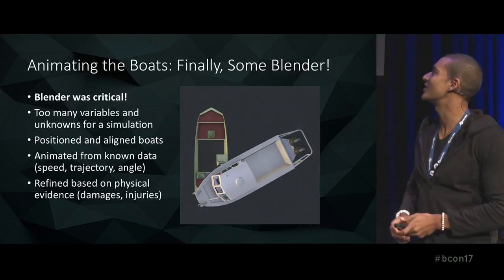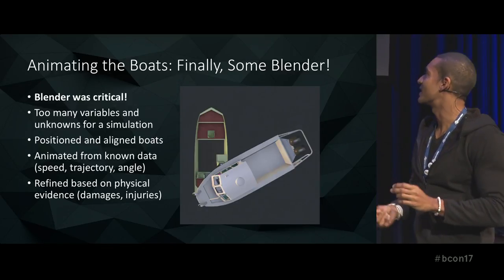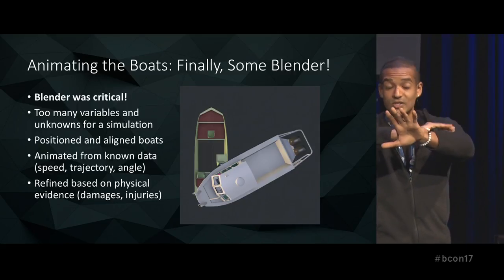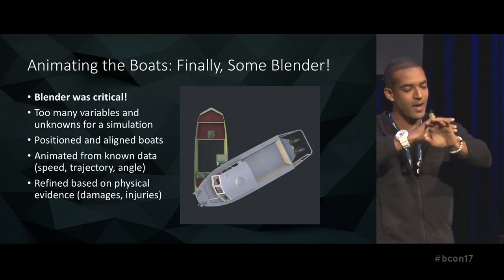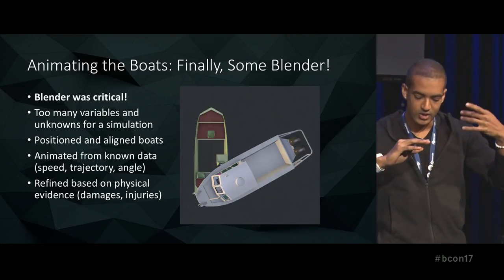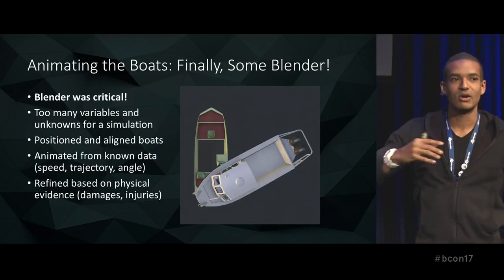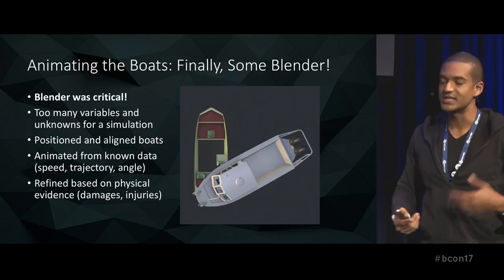This is where Blender really came in handy — it was critical. Because all we had was the angle and the damages, I started by overlaying the two vessels onto one another where the damages actually happened, and just started from our known data — the position and angle — then refined based on the physical evidence, the injuries, the damages, trying to make everything match as well as possible. With something like this you have a lot less certainty than a car crash where you have a photo of the finished scene.